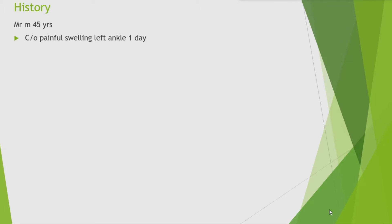What will be the differential diagnosis here? First, acute arthritis — we think of septic arthritis. Then other possibilities: gout arthritis is less likely as it commonly affects the first metatarsophalangeal joint. Reactive arthritis also starts from one joint.